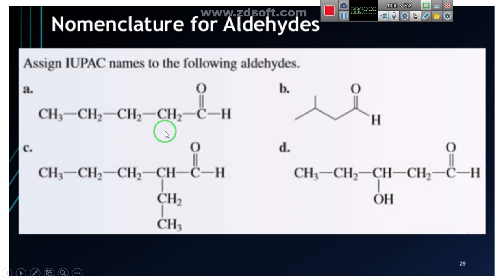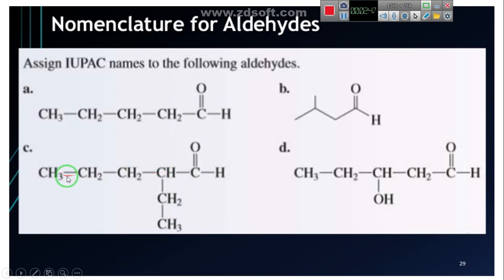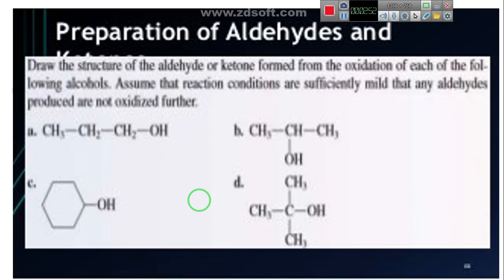For example, with a chain of one, two, three, four, five carbons, this is pentanal. The branch is an ethyl group at position three. So the full name is 3-ethylpentanal, with the C=O at carbon one.